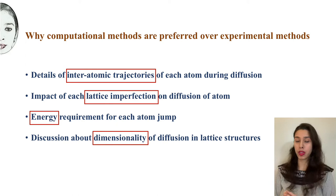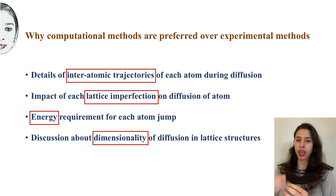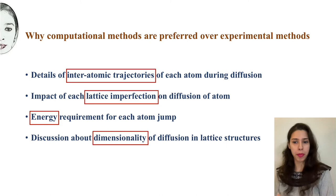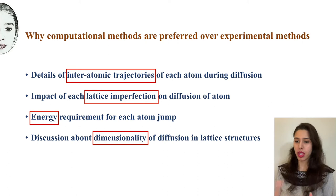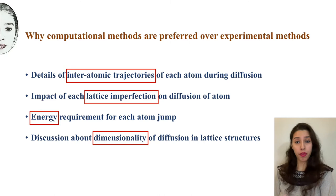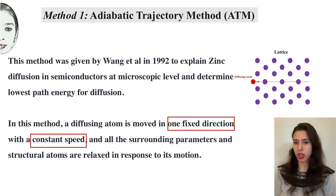The energy required for each atom jump is more clearly understood in computational methods. When an atom is diffusing in a solid, the energy required to make a single jump in the x dimension will be different from what is needed to make a jump in the y or z dimension. Computational methods give you a clear picture of this. We also get to know the dimensionality of diffusion — in some crystals, atoms might be able to diffuse in the vertical direction but not horizontal, or vice versa.